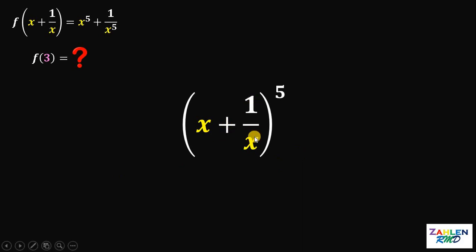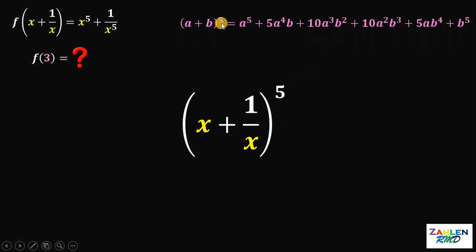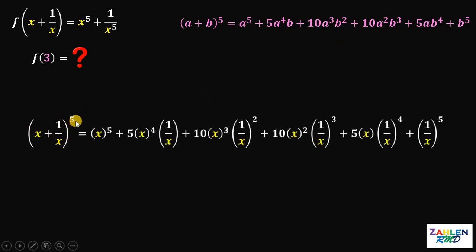We have (x + 1/x) to the fifth power. Take note of this identity: (a + b) to the fifth power is equivalent to a^5 + 5a^4·b + 10a^3·b^2 + 10a^2·b^3 + 5a·b^4 + b^5. Using this identity, the expansion of (x + 1/x)^5 equals x^5 + 5x^4·(1/x) + 10x^3·(1/x)^2 + 10x^2·(1/x)^3 + 5x·(1/x)^4 + (1/x)^5.